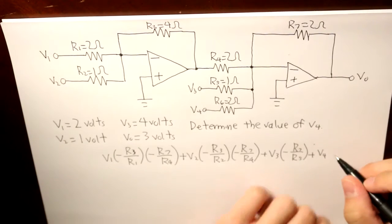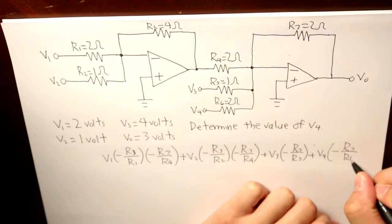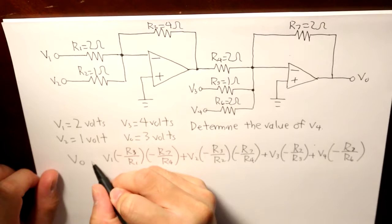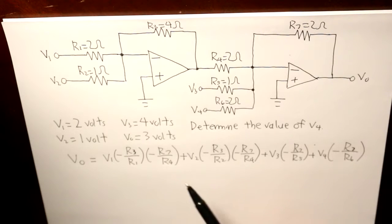Same thing goes for V4, and our output voltage will look like this. But the question is to determine what V4 is. We already know what V0, V2, V1, and V3 is going to be like. So, what is V4?